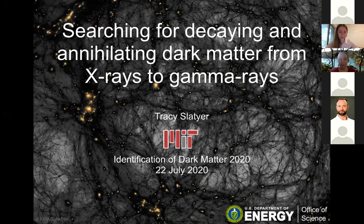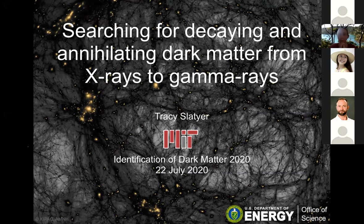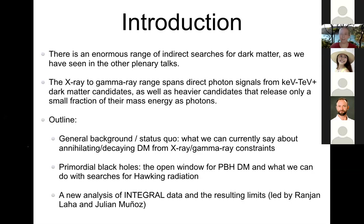Thank you very much for the invitation. I was asked to talk about dark matter constraints on decaying and annihilating dark matter from the X-rays to the gamma rays, and at some level you've probably already heard quite a bit about this today. There were excellent talks this morning on constraints on sterile neutrinos and the galactic center gamma ray excess and probes of dark matter in gamma rays. What I want to do is begin by talking about where we currently are in terms of X-ray and gamma ray searches for dark matter annihilation and decay, to give a general summary of our current status.